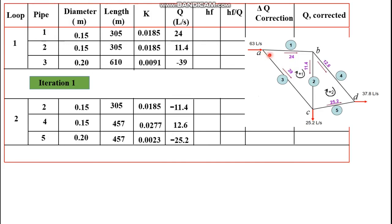Proceeding to node B: flow entering is 24, so flow leaving will be 11.4 plus 12.6. At junction C, flow leaving is 25.2 and flow entering is 39 plus 11.4. Finally, at junction D the flow leaving is 37.8, so the remaining flow in pipe BD will be 12.6. We now have the assumed flow for every pipe. Clockwise flows are positive and counterclockwise flows are negative.